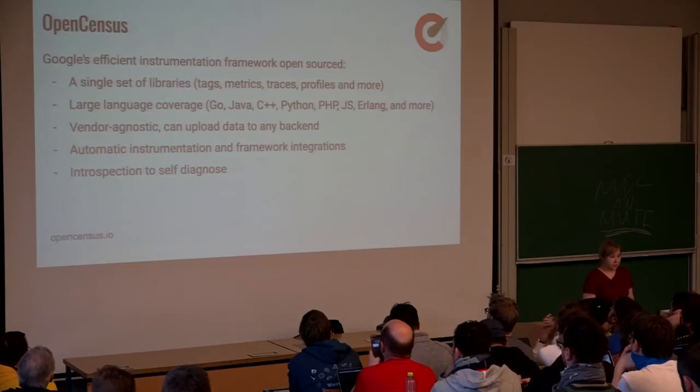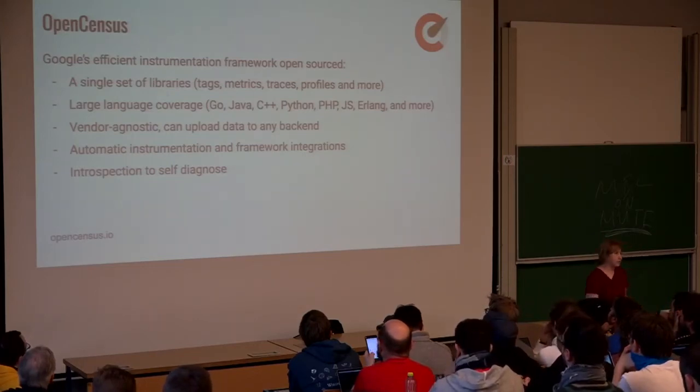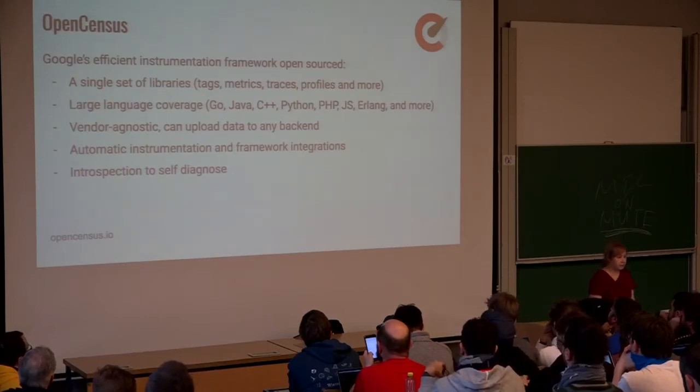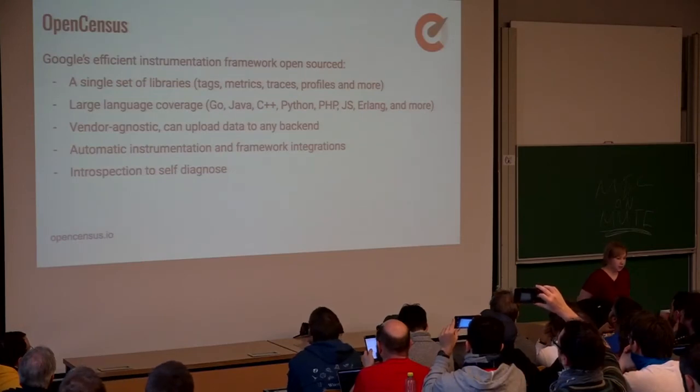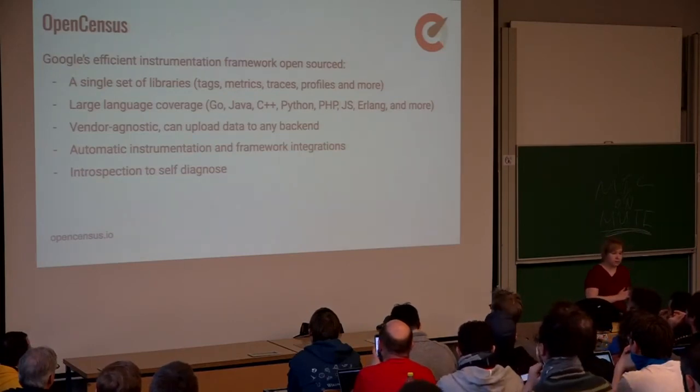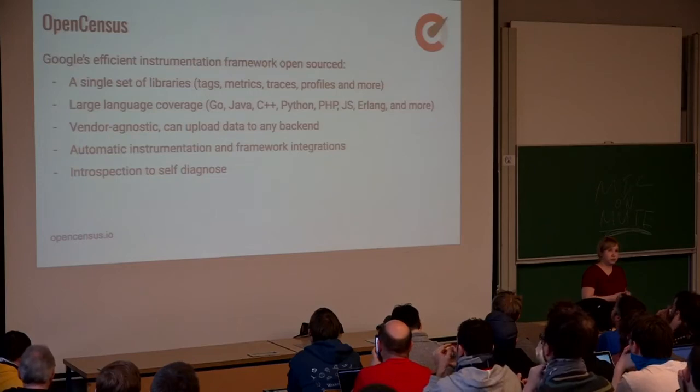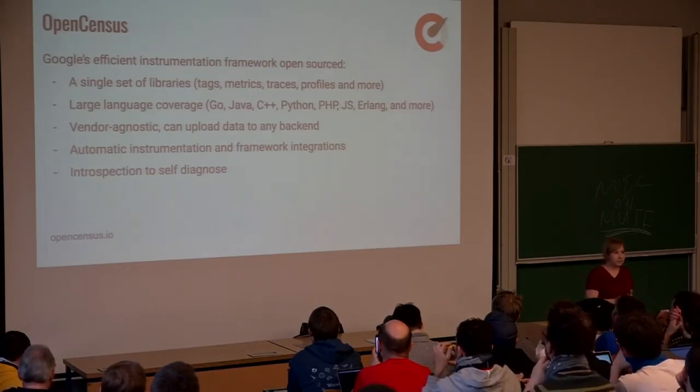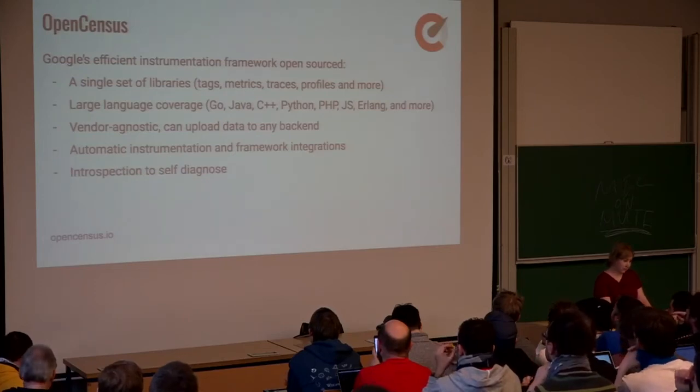We have language support available today for Go, Java, and C++. Python, PHP, JavaScript, C Sharp, and Erlang are coming next. The libraries, our instrumentation libraries, are vendor agnostic. So you can upload data to any backend. We currently have support for Prometheus, Zipkin, Jaeger, and some APM vendors. Some other APM vendors are also thinking that this is a useful solution to instrumentation rather than inventing their own instrumentation libraries. So they are working to provide OpenCensus support.